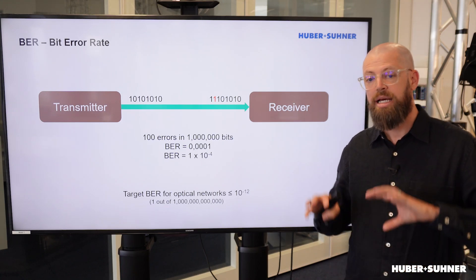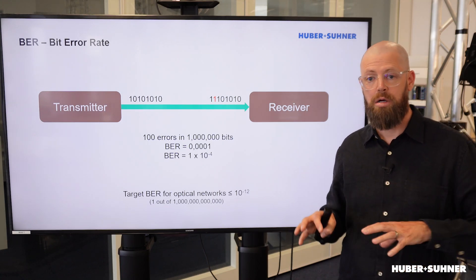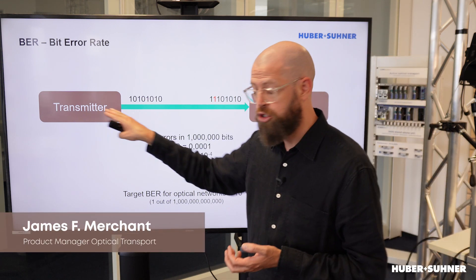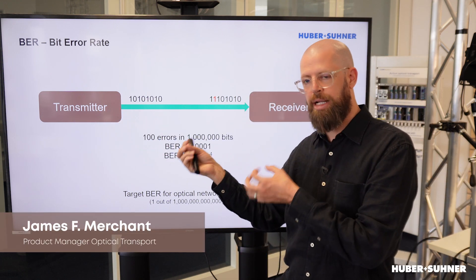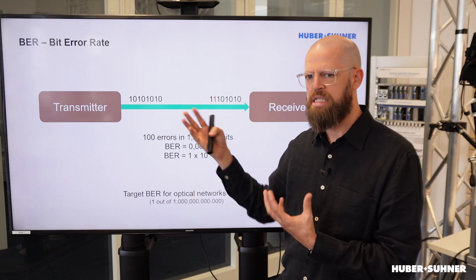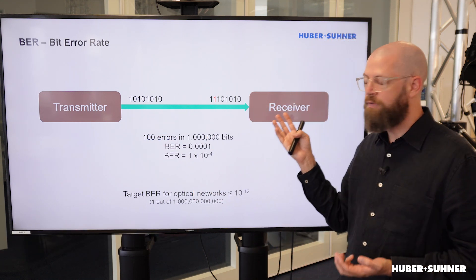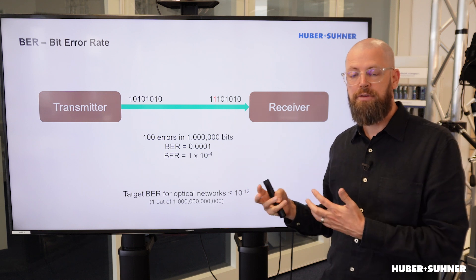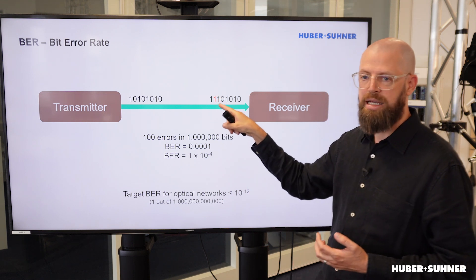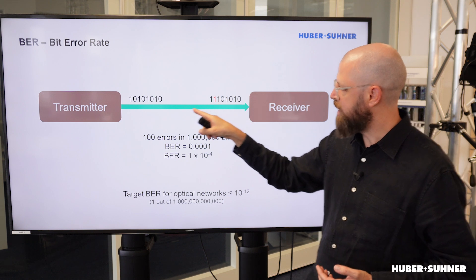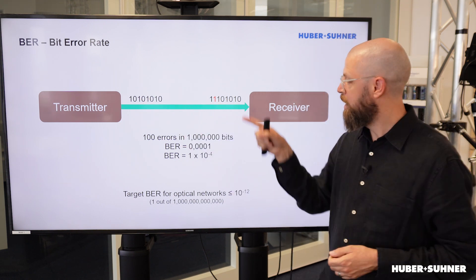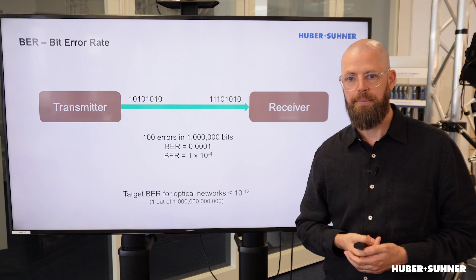To understand the bit error rate, let's first talk about what an error is. In this setup, we've got a transmitter, and that transmitter will transmit a sequence of bits — in this case 8 — and the receiver will receive those bits. But as you can see here, highlighted in red, that one bit is different to what was originally transmitted, meaning that is one error.